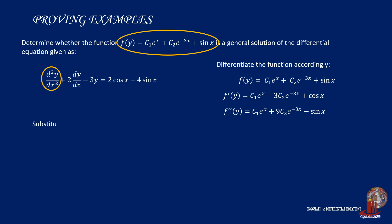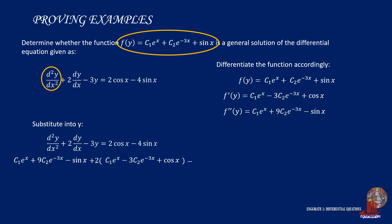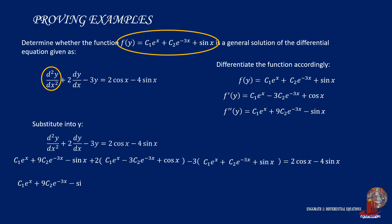Now that we have the needed functions, substitute them into the original equation: the second derivative plus 2 times the first derivative minus 3 times y, set equal to 2 cosine x minus 4 sine x. This gives us a long equation. After distributing the coefficients, we arrive at a longer but simpler expression where terms can be cancelled out.